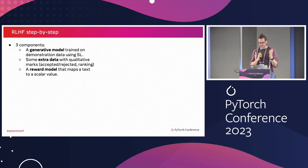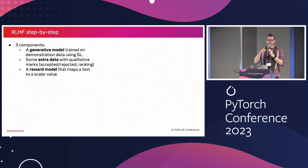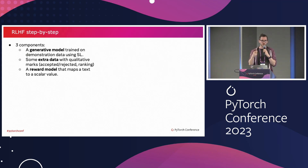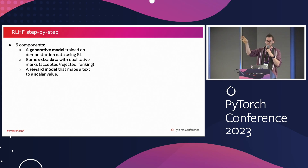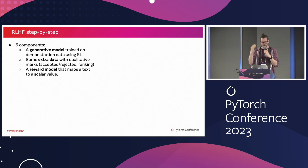How does RLHF work step by step? You first need three components: a generative model, something like GPT. Then you need some extra data — data that is basically annotated as good or bad based on the output of the model. This is usually done with actual people interacting with the model who look at the output and say this was a very good output or this was a very bad output. Maybe they rank them, and they produce a whole dataset of rankings.